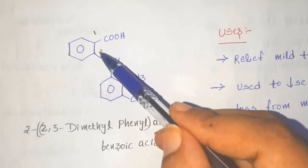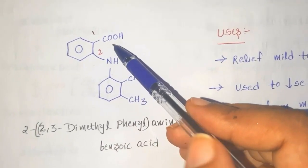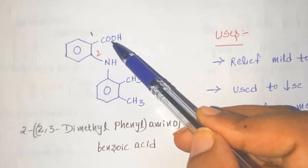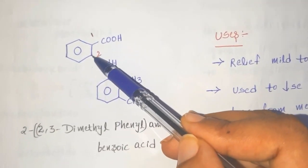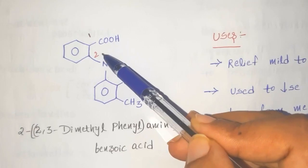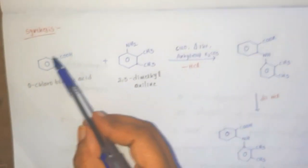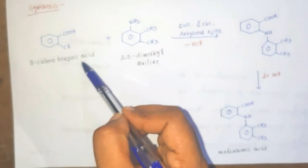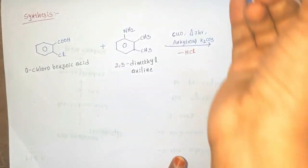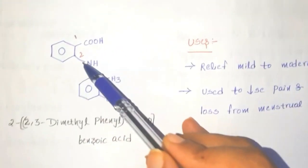So it is an aromatic ring which contains COOH group and this carbon is attached with that chlorine. So that is called as ortho-chloro benzoic acid.